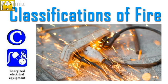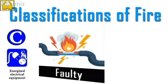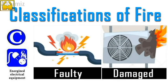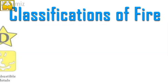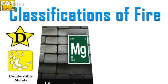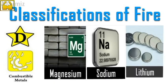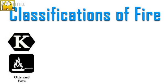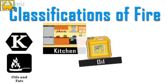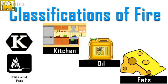Class C fires: these are related to electricity. Fires caused by faulty electrical equipment and damaged electrical appliances come under Class C fires. Class D fires: combustible metals come under this classification, such as magnesium, sodium and lithium. Class K fires: cooking-related materials such as oils and fats come under this classification.